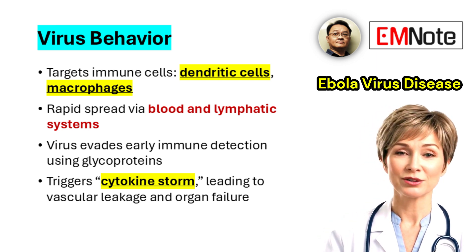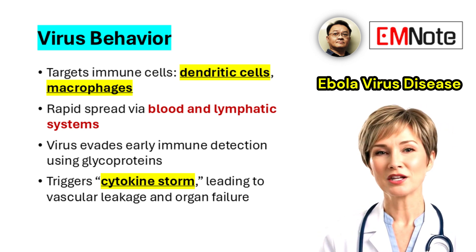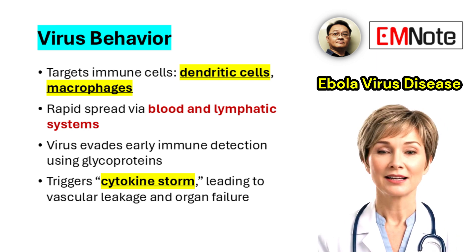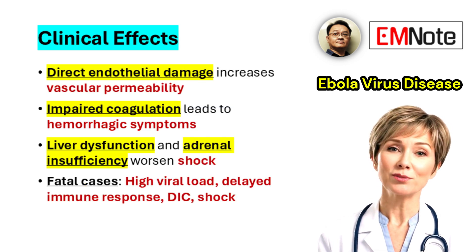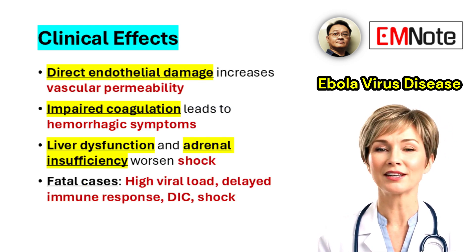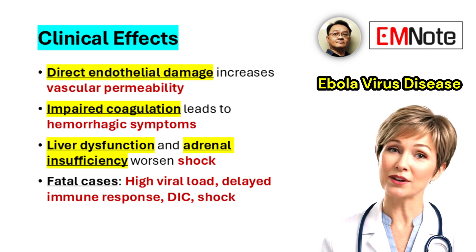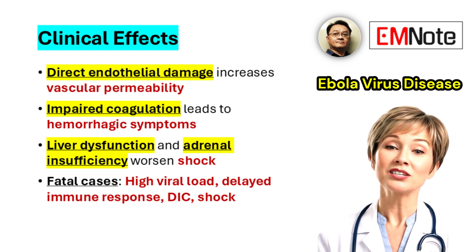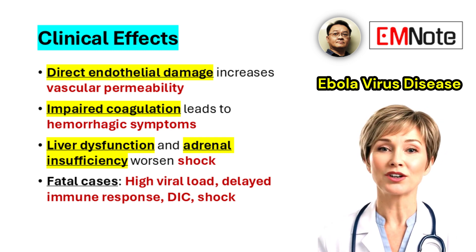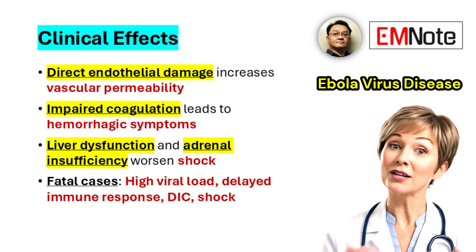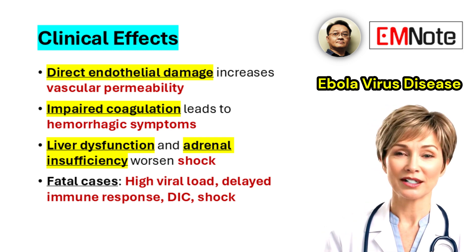Infected macrophages and dendritic cells release pro-inflammatory cytokines, contributing to a cytokine storm characterized by widespread vascular leakage, impaired coagulation, and multi-organ failure. The direct infection of endothelial cells disrupts vascular integrity, increasing permeability and causing plasma leakage. Coagulation abnormalities arise from clotting factor consumption and platelet dysfunction. Bleeding manifestations occur but are not present in all cases. Hepatic infection impairs clotting factor production, and adrenal gland infection can cause adrenal insufficiency, worsening the circulatory collapse.